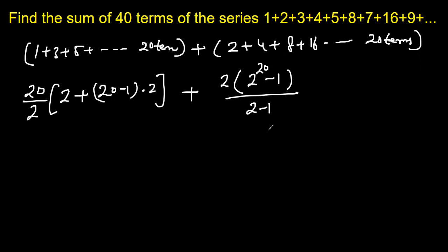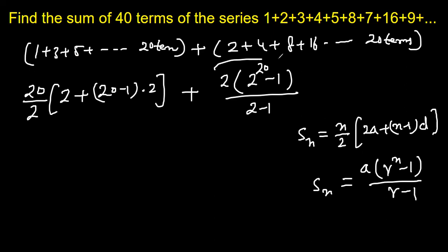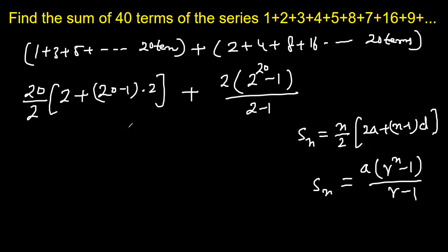The formula used here is: for AP, S_n equals n by 2 times (2a plus (n minus 1) times d), and for GP, S_n equals a times (r to the power n minus 1) over (r minus 1). These are the formulas applied for the AP and GP parts respectively.